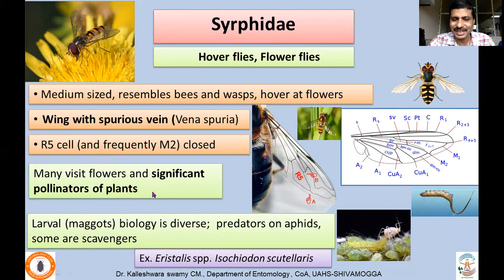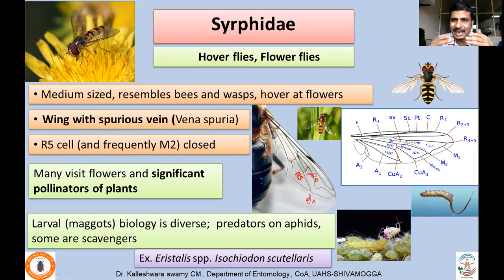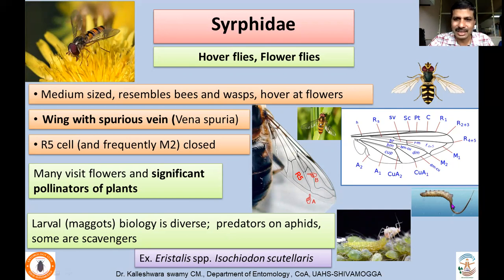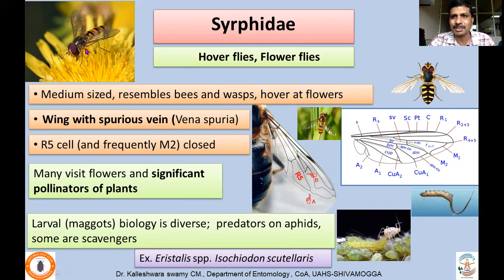Adults are significant pollinators, while larvae are highly diverse — many are predators on aphids found within aphid colonies, making them beneficial. Some larvae are scavengers, found in water bodies feeding on organic material. For example, Eristalis species have a long caudal breathing tube, and Syrphus scutellaris larvae act as predators while adults act as pollinators.